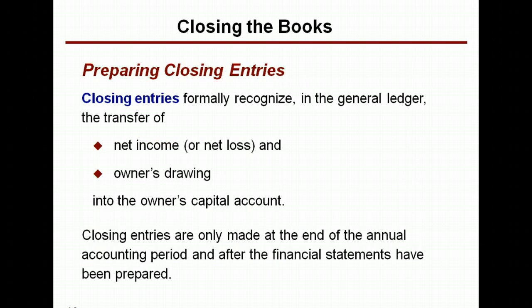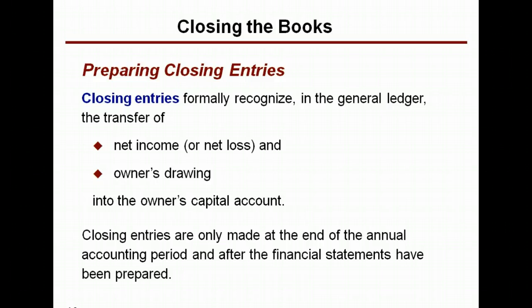So how do we accomplish that? We make closing entries. Closing entries formally recognize, in the general journal, the transfer of net income and the owner's draw account into the owner's capital account. They're made in the next available line in the general journal. Closing entries are only made at the end of the annual accounting period, and they're made after the financial statements have been prepared. If you make them before the financial statements are prepared, net income will be zero because you will have zeroed all your revenue and expense accounts. Remember, financial statements are not the last step of the accounting cycle — they're made right after the adjusted trial balance.